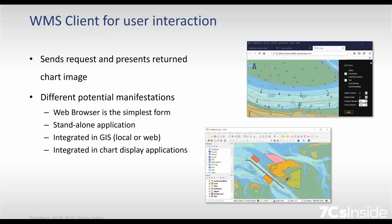A WMS client could also be a standalone application. The client could be integrated in a GIS system — either local or web-based GIS. So it's very flexible in this respect. Also, the client could be integrated in chart display applications similar to navigation software. In this case it's not used for primary navigation, but for example for mission planning or for operations on board where we do not have an online connection anyway.